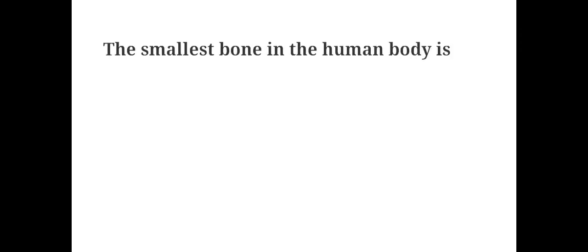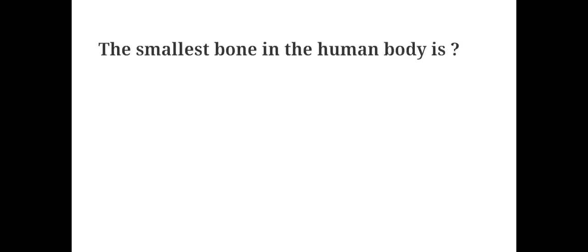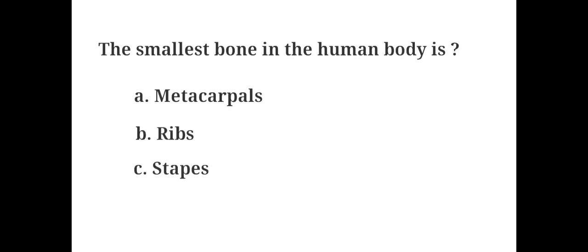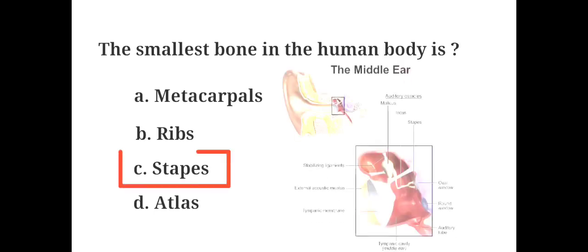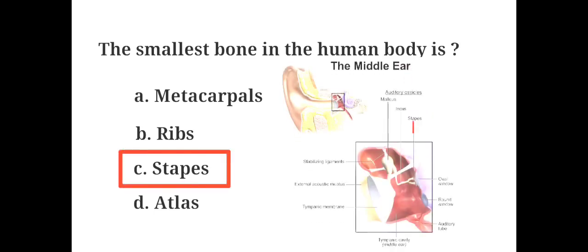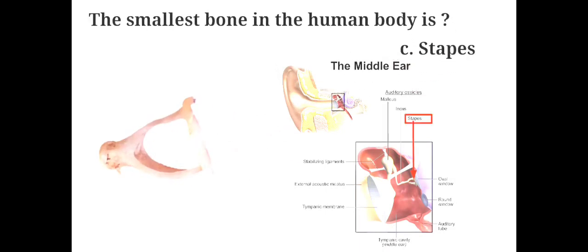The smallest bone in the human body is: A. Metacarpals, B. Ribs, C. Stapes, D. Atlas. The answer is C. Stapes. The smallest bone in the human body is the stapes.